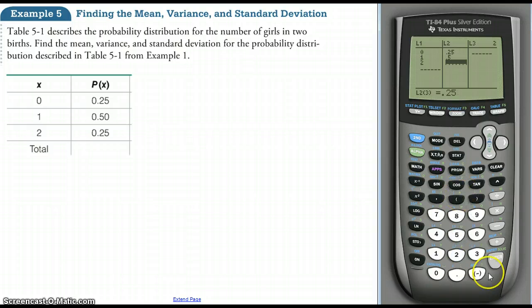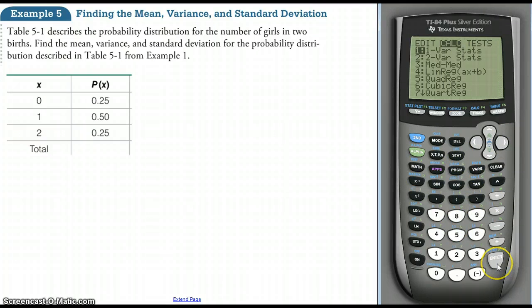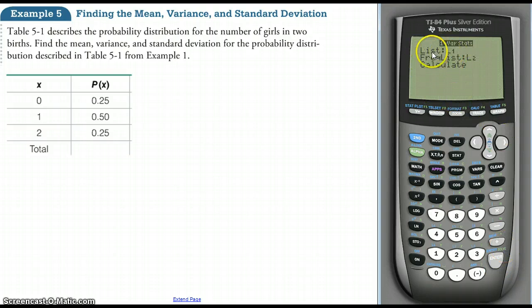And then now I want to calculate the mean, standard deviation, and variance. So to do that I'm going to click stats, go to calc, one-var stats, and it already has my list for me. So the list is my x values—zero, one, two—and the frequency list that corresponds to my probability values, and that's list two. That's where I stored list two.